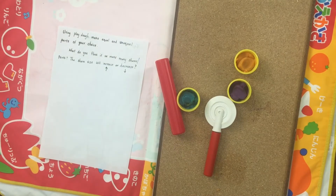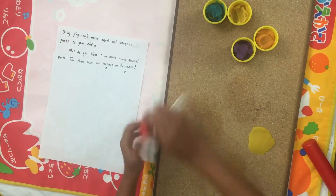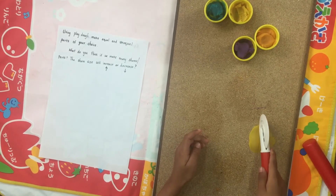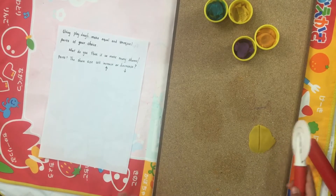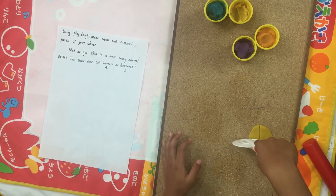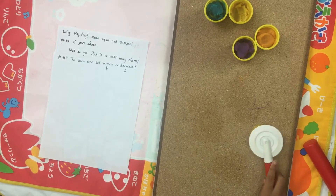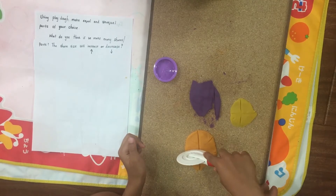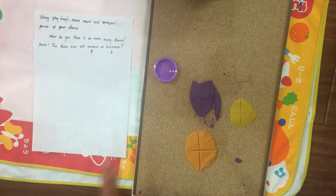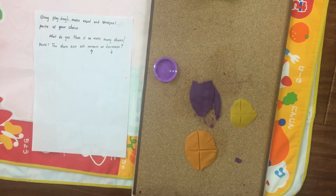First you are going to do equal, then unequal. How many parts are you making now? Four — okay, so this is equal. It's a continuation where he needs to use play-doh to find whether the share gets bigger or smaller when you make multiple parts. When it is half, the size of the share is more. How many parts have you made now? Four — so the sizes are getting decreased, not increased.